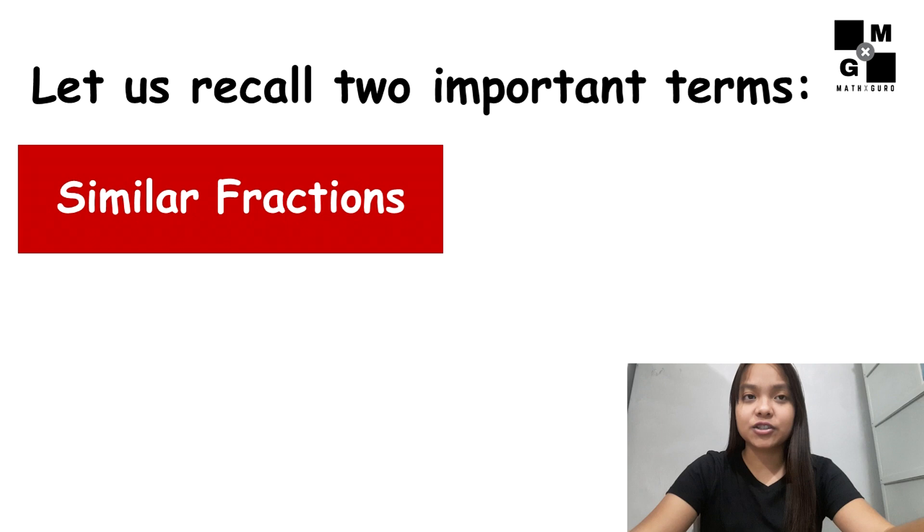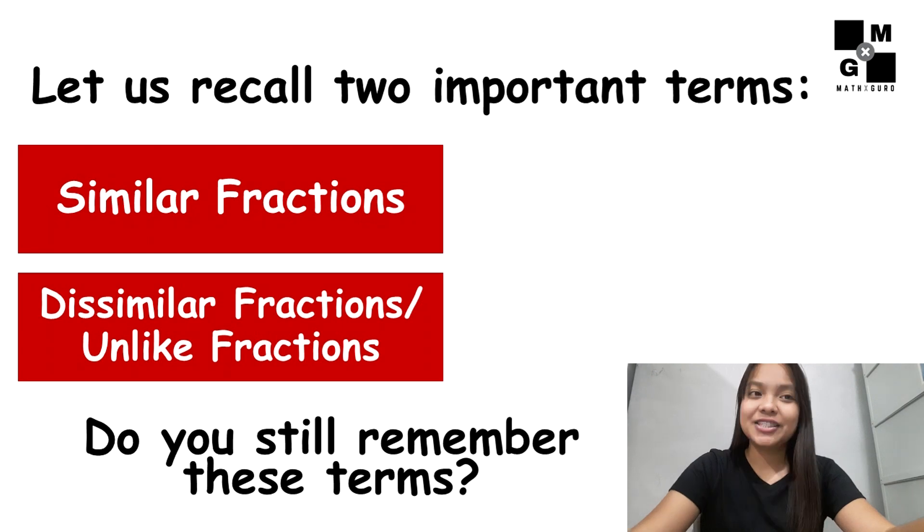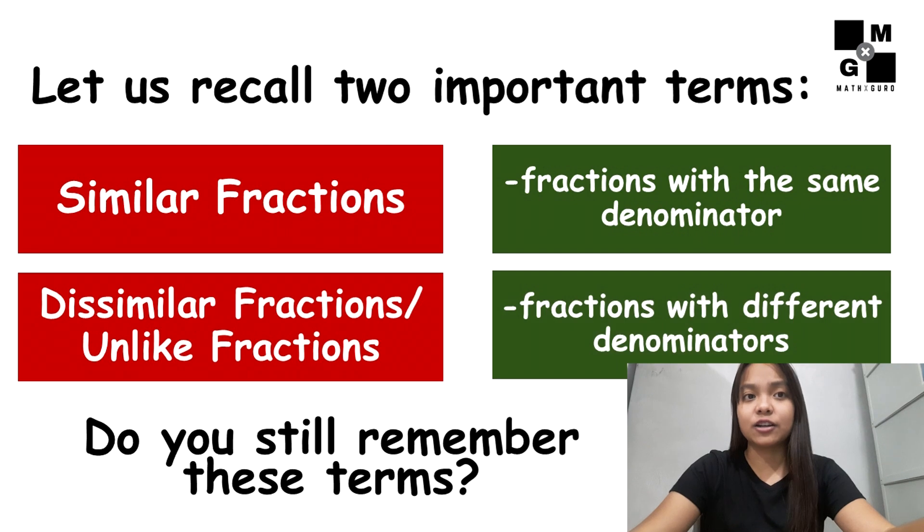These are similar fractions and dissimilar fractions, also known as unlike fractions. Do you still remember these terms? Similar fractions are fractions with the same denominator, while dissimilar or unlike fractions are fractions with different denominators. Do you remember these terms now?